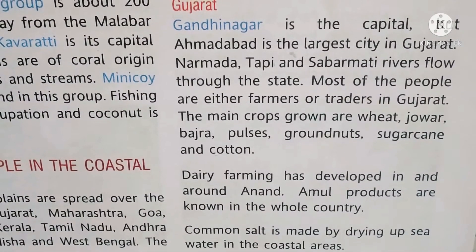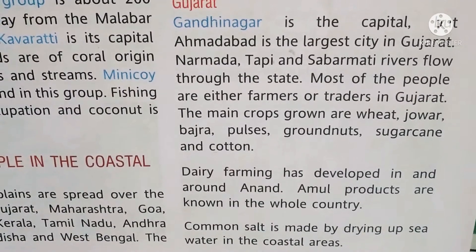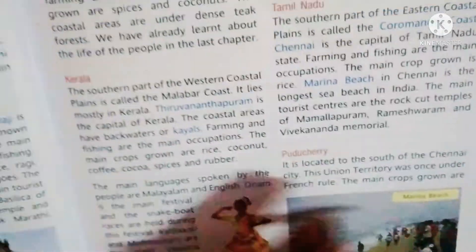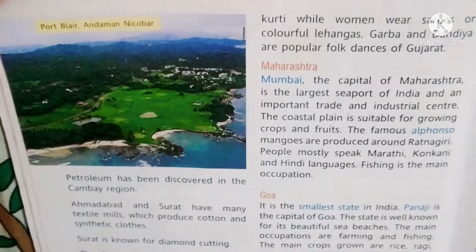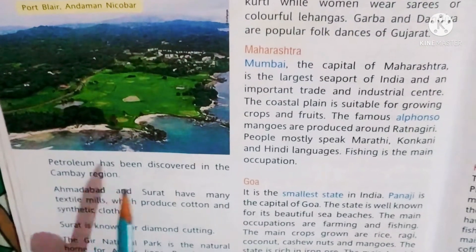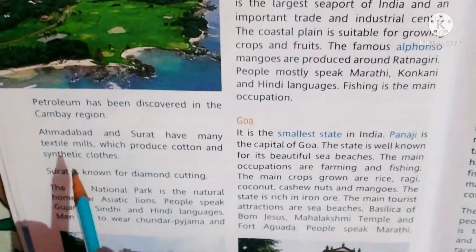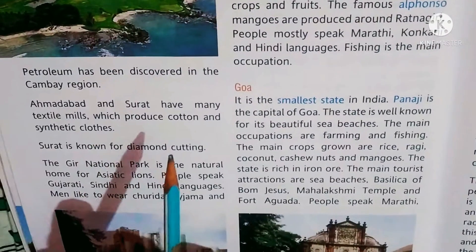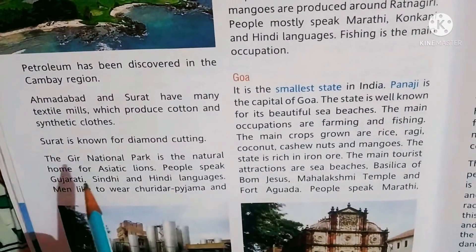Common salt is made by drying sea water in coastal areas. Petroleum has been discovered in the Cambay region. Gujarat is also a source of many textile industries producing cotton and synthetic fabrics.